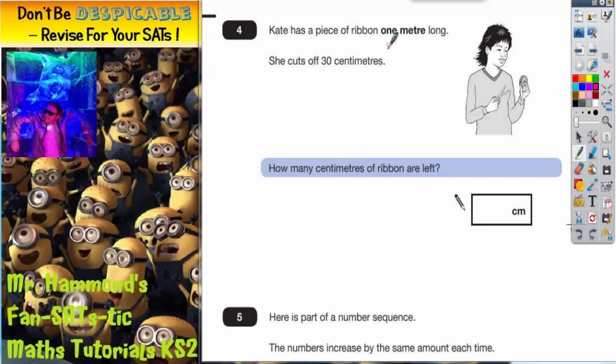Question four says, Kate has a piece of ribbon one meter long, she cuts off 30 centimeters. How many centimeters of ribbon are left?